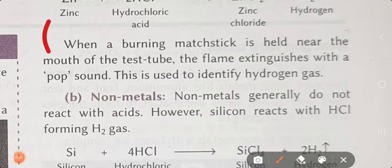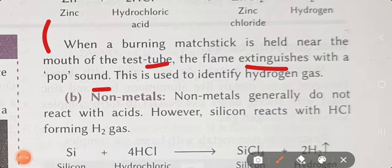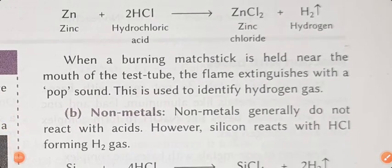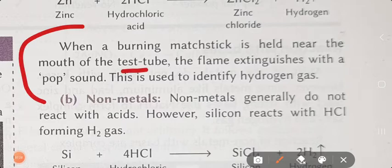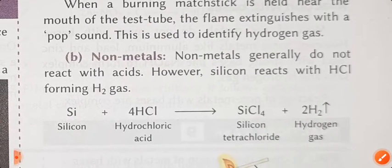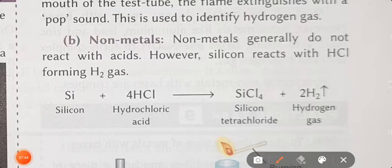When a burning match stick is held near the mouth of the test tube, the flame is extinguished with a pop sound. This is used to identify hydrogen gas. जब हम ये सारे practicals अपने lab में perform कर रहे होंगे, तो आप एक burning match stick लेंगे, उसे test tube के near लेके जाएंगे जहाँ ये सारे acids react कर रहे हैं - वहाँ पर एक pop sound मिलेगा, जो hydrogen gas की presence को identify करता है।